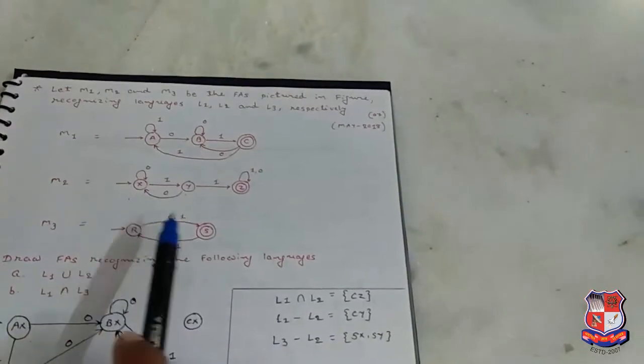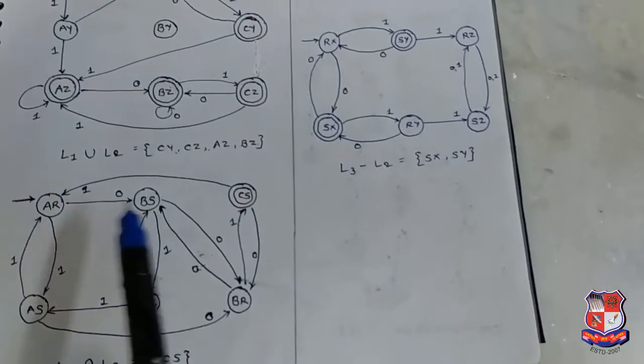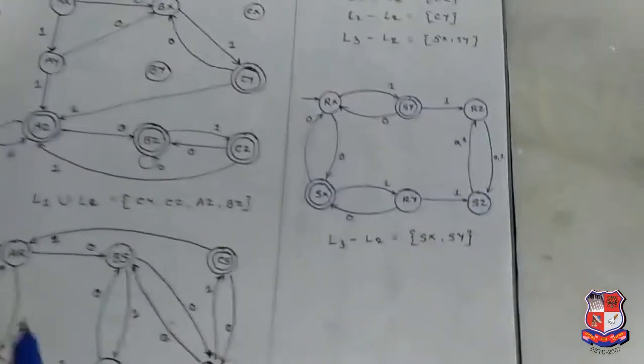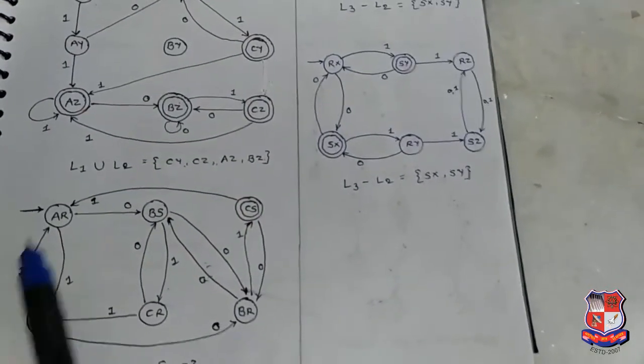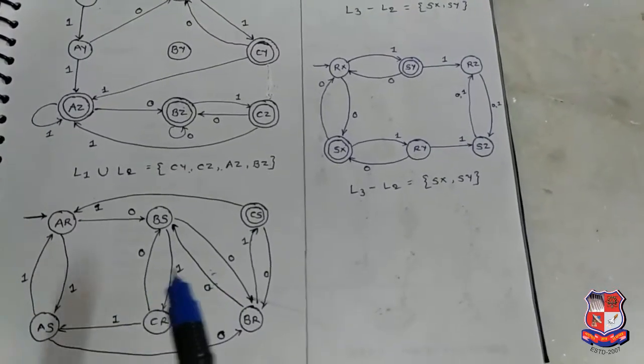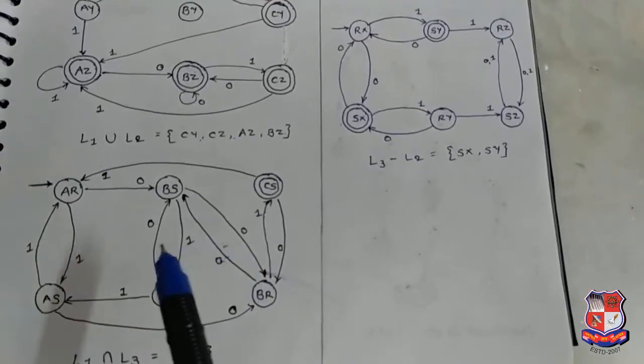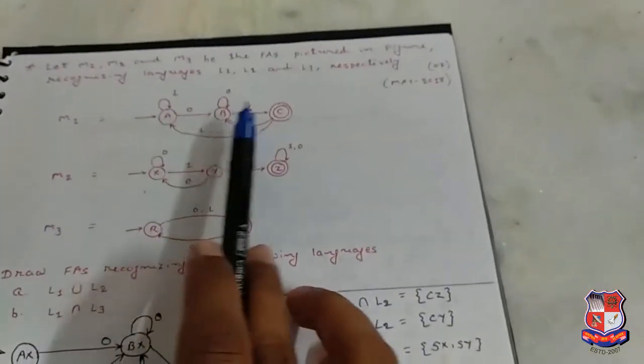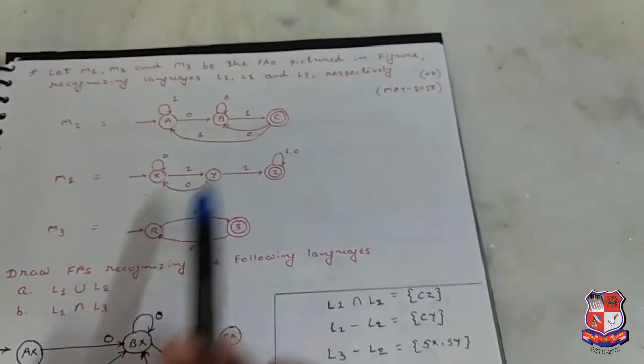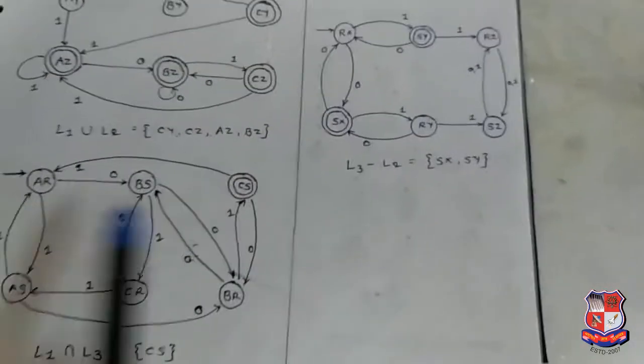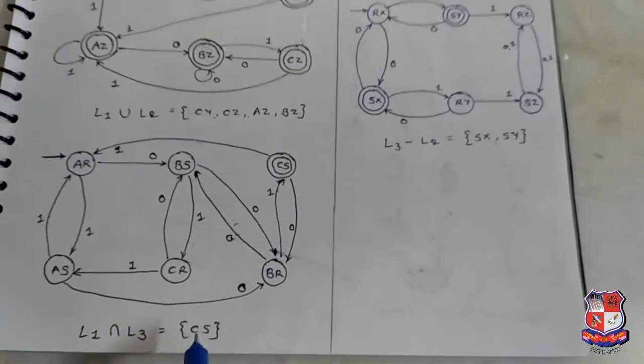The states are A R, A S, B R, B S, C R, C S. Draw all the 0 and 1 transitions for the visited states. For L1 intersect L3, final state in L1 is C and in L3 is S, so for this automata final state is C S.